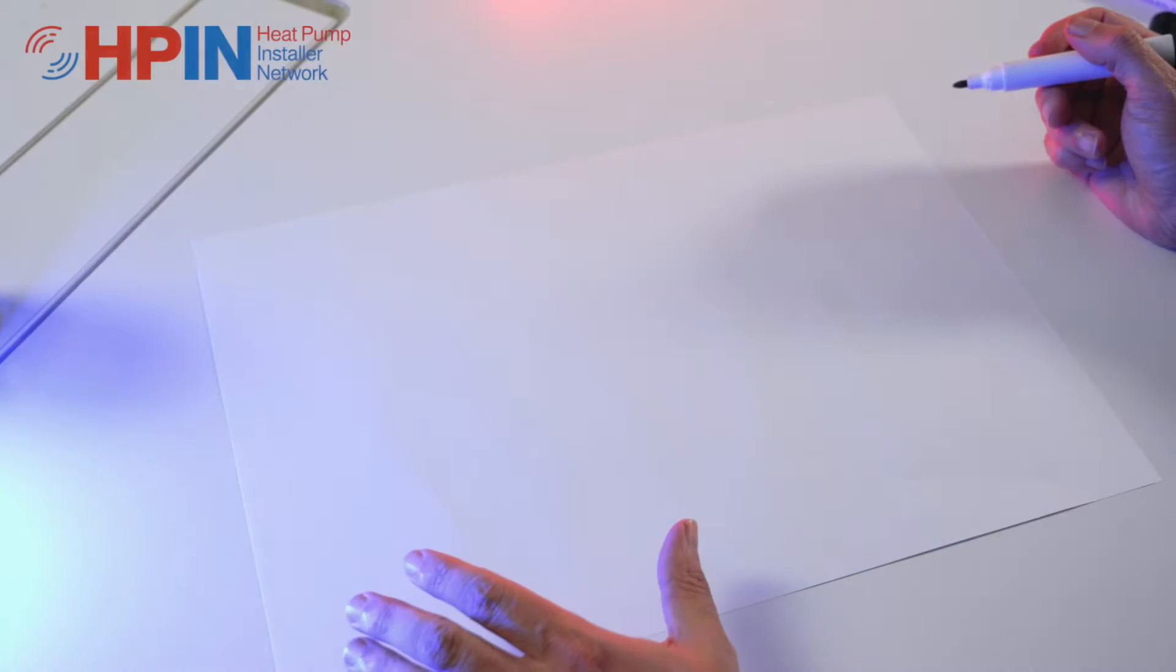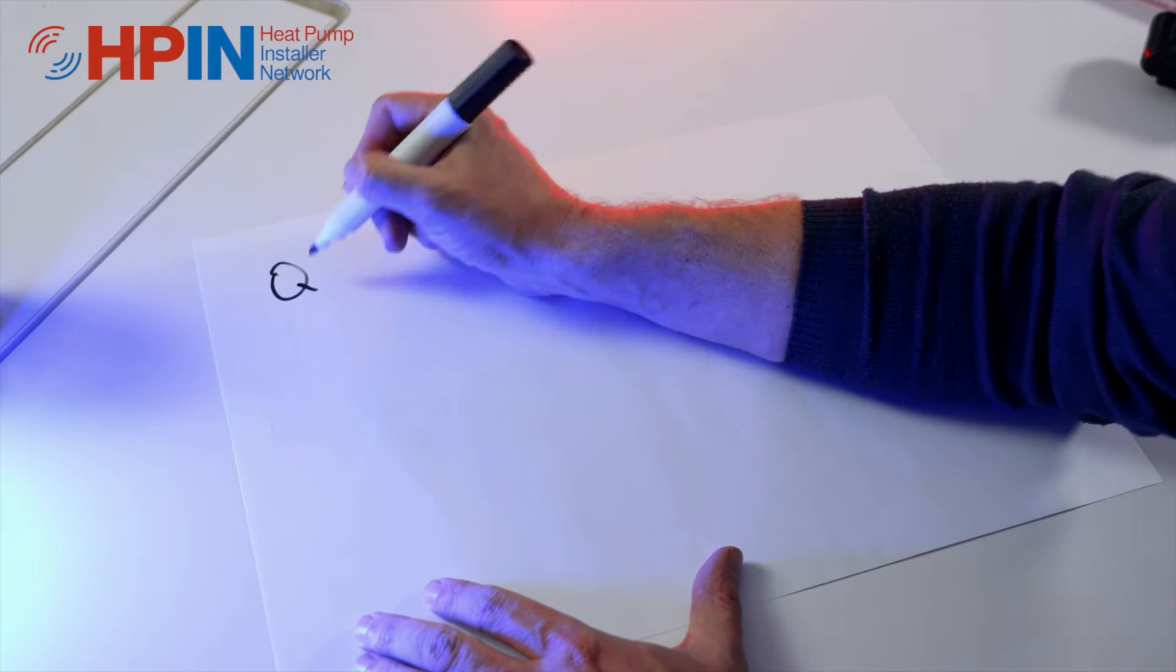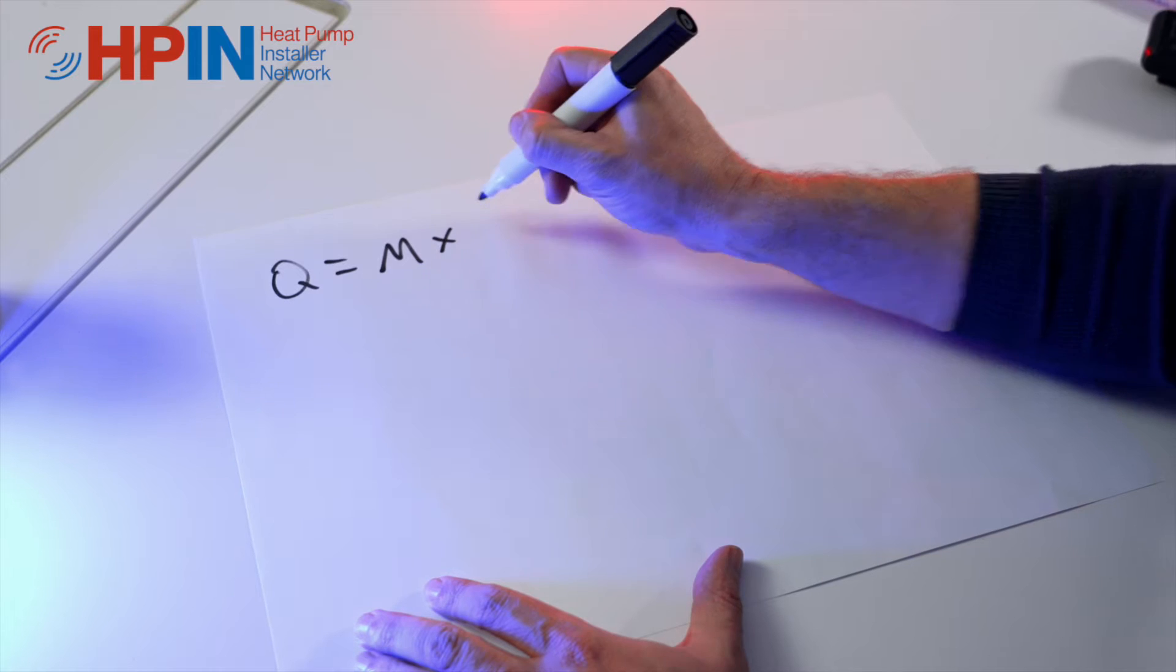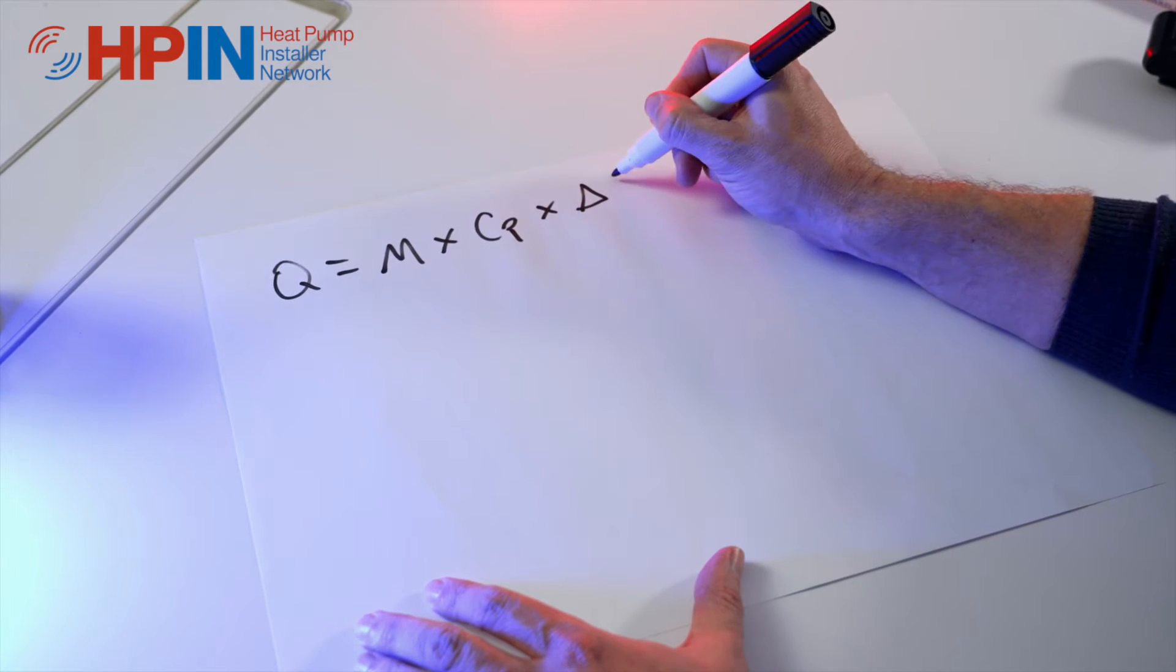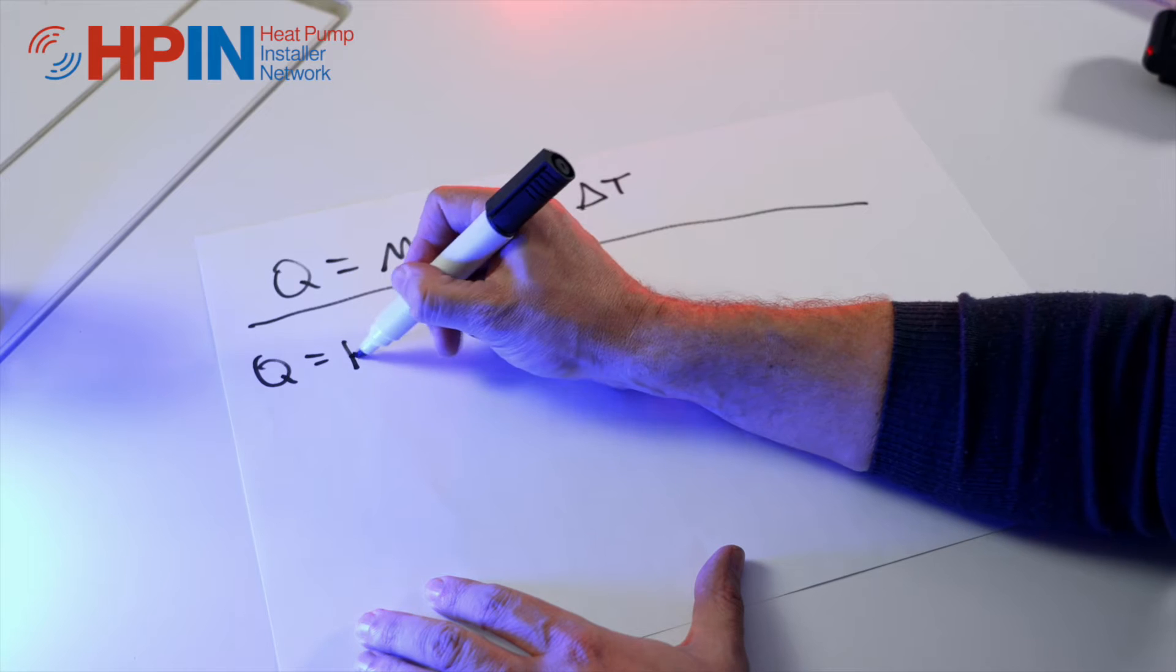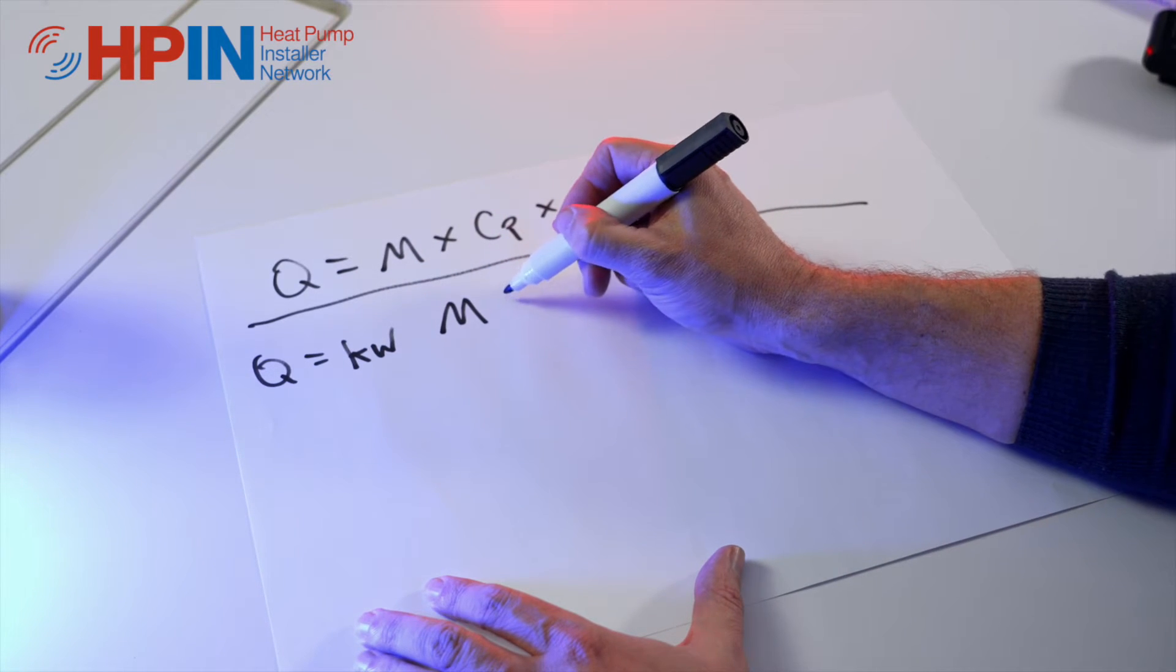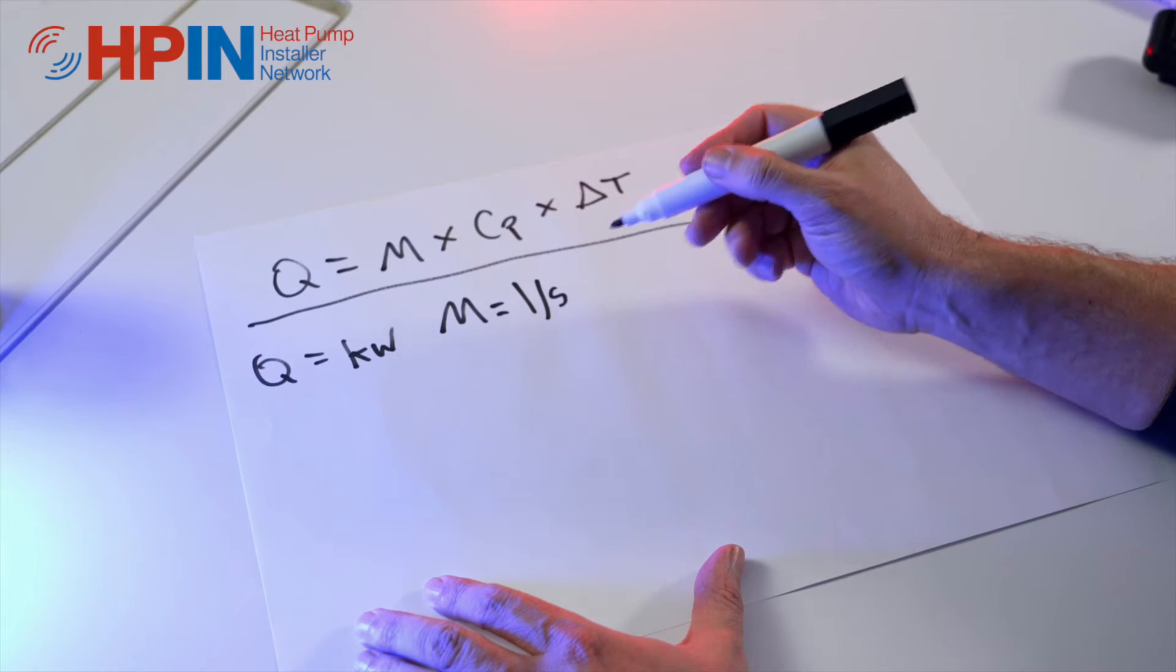We can use this equation to show how important flow rates can be. The equation goes like this: Q equals m times Cp times delta T. Q is our kilowatts, m is measured in litres per second, not litres per minute, so we'll have to convert that.